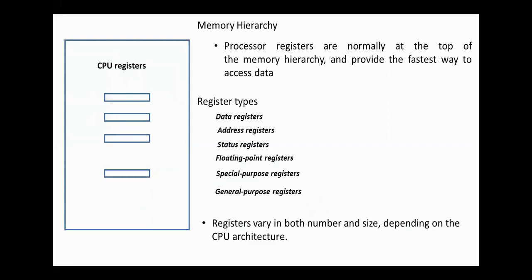There are several types of CPU registers such as data registers, address registers like memory address register, status registers usually used to hold truth values to determine whether some instructions should be executed or not, floating point registers, special purpose registers like program counter used to hold the address of the next instruction to be executed, and general purpose registers used to hold operands and intermediate results.